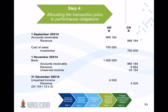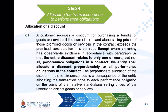Having seen the allocation of the transaction price, you can now start recognizing amounts in the journal entries: revenue for the sale of equipment on 1 September, installation costs on 1 November, and training — which is done over a period of time as a series of goods and services.